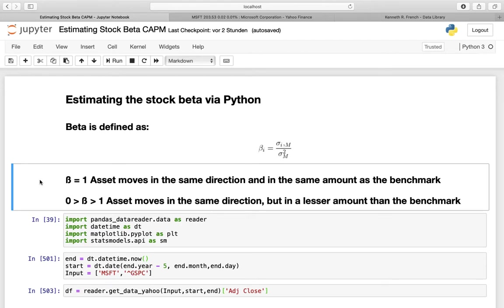A beta of 1 means that the asset, so for example Microsoft, moves in the same direction and in the same amount as the benchmark. Let's take an example. The S&P 500 is rising by 1%, then Microsoft is also rising by exactly 1%.